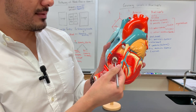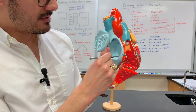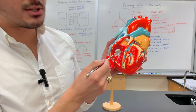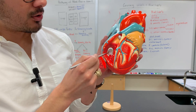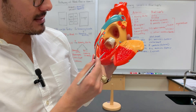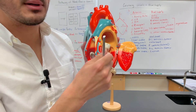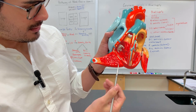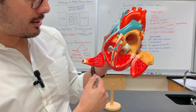You also have the tricuspid valve here. The heart strings are what's known as the chordae tendineae, which are anchored by the papillary muscles. On the walls of the heart you have the trabeculae carneae.